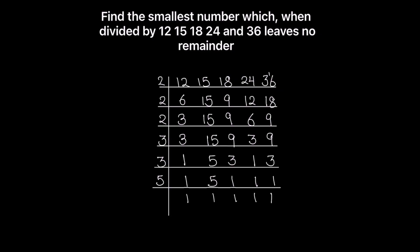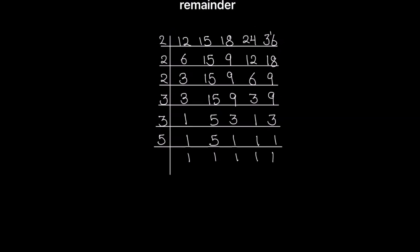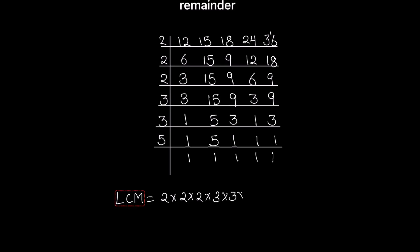To find the LCM, we need to take the product of all the numbers on the left-hand side of the ladder. So LCM = 2×2×2×2×3×3×5. Simplifying: 2×4=8, 8×3=24... let's compute it as 4×3=12, 12×3=36, and 5×2=10, so LCM = 36×10 = 360.